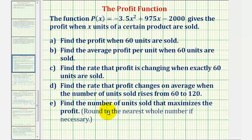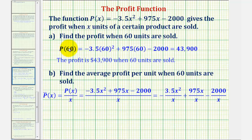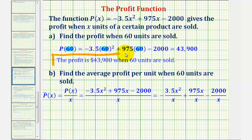Because we have so many questions here, I've already set some of the work up. For part A, to find the profit when 60 units are sold, we want to find p of 60. So we substitute 60 for x into our profit function — we have 60 squared and 60 — and this comes out to $43,900. So the profit is $43,900 when 60 units are sold.